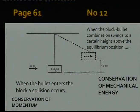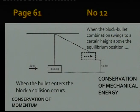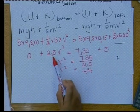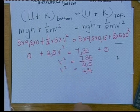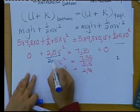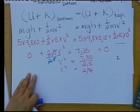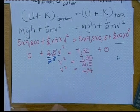Remember, this part — the block and bullet moving upward — represents conservation of mechanical energy. To isolate v, you need to get rid of the 2.5 on the left-hand side. If you divide the left-hand side by 2.5, you must also divide the right-hand side by 2.5, which cancels the 2.5 and gives you v².